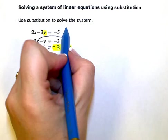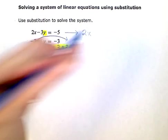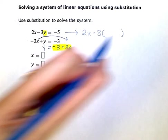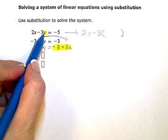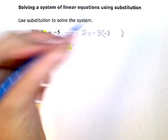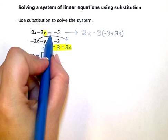And in this top equation, I'm going to substitute that in for the y. So if I rewrite this top equation, it'll be 2x minus 3. And I'm going to put a parenthesis with a big space because instead of that y, I'm going to replace it with negative 3 plus 3x and then equals negative 5.